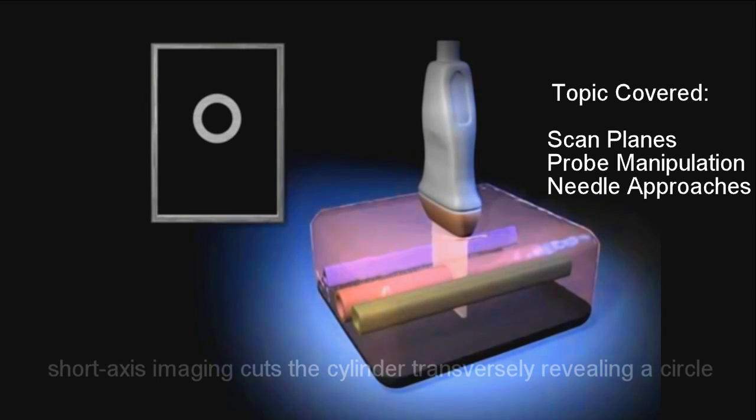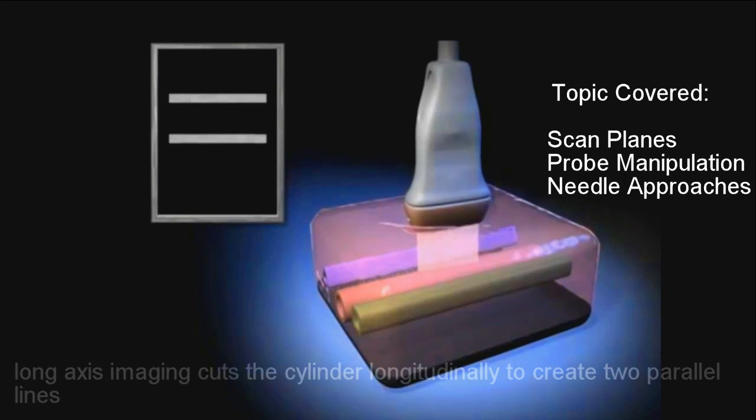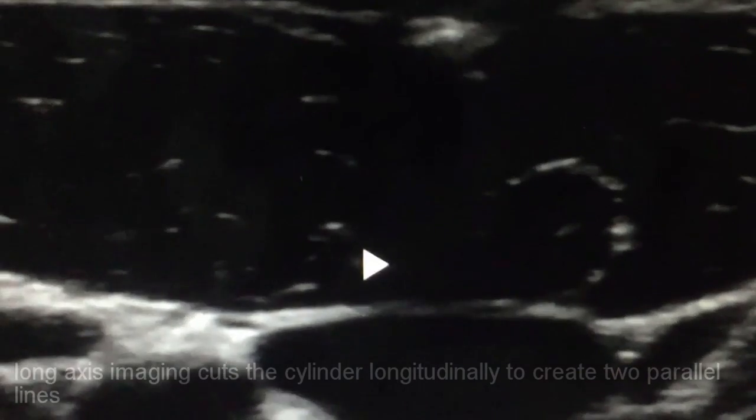Short axis imaging cuts the cylinder transversely, revealing a circle. Long axis imaging cuts the cylinder longitudinally to create two parallel lines.